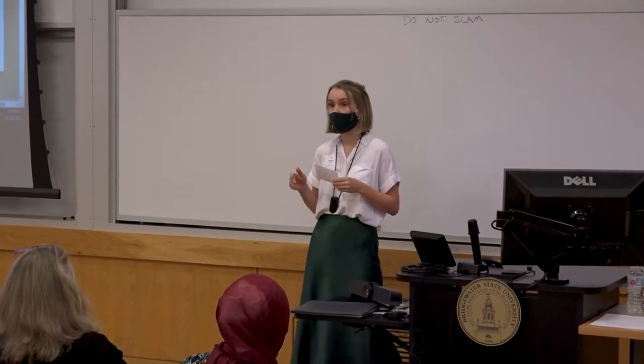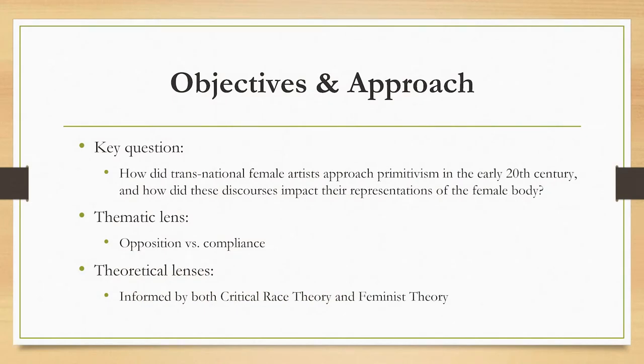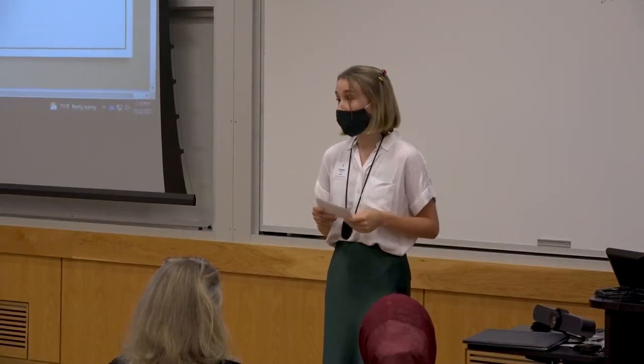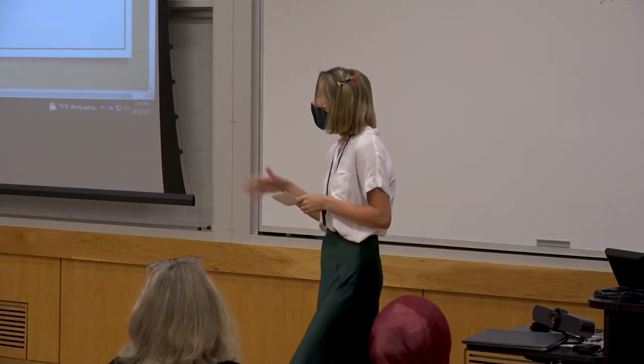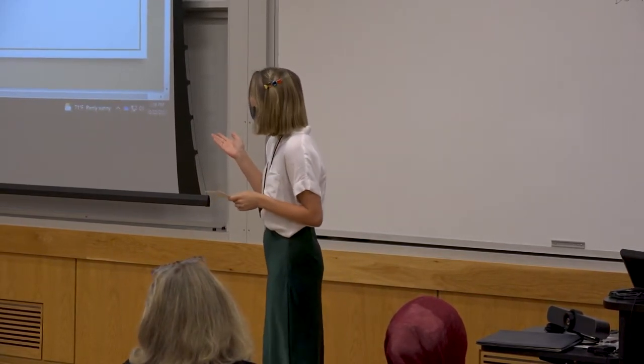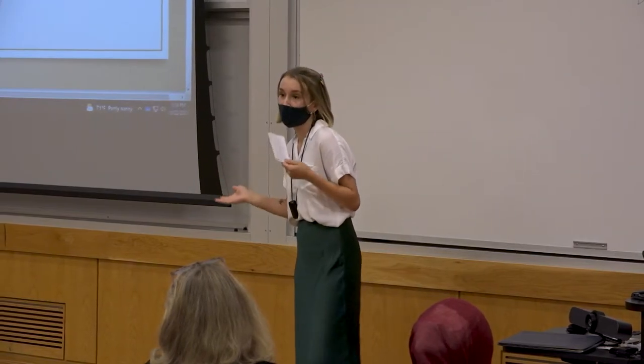The key question of my study is how did transnational female artists — transnational meaning women who spent significant periods of time in more than one country — how did they approach primitivism in the early 20th century? And how did these discourses impact their representations of the female body? The thematic lens I employed was opposition versus compliance — how did they make works that move towards and against these aesthetic tropes based in primitivist ideology? The theoretical lenses I used were critical race theory and feminist theory, because this was an intersectional study.